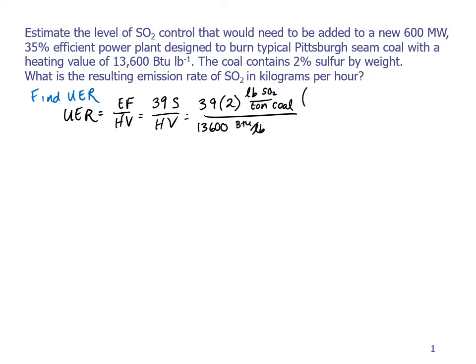Now we need to convert between pounds and tons. So we'll multiply the numerator by this conversion factor of 1 ton per 2,000 pounds to get our units to work out right. And that gives us 2.9 times 10 to the minus 6 pounds of SO2 per BTU of heat input in the coal, which is 2.9 pounds per 10 to the 6 BTU in the terms that people talk about these types of things.